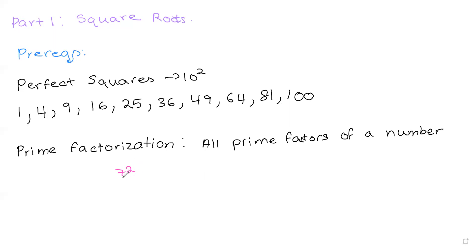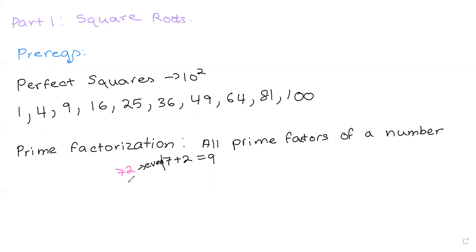We're going to think about what numbers 72 can be divided by. Looking at the number, there are two ways we can go: we know that 7 plus 2 is equal to 9, which means it's divisible by 3 and 9. And since the number ends with a 2, it is even. Since 9 is not a prime number, I'm going to use 3 instead.